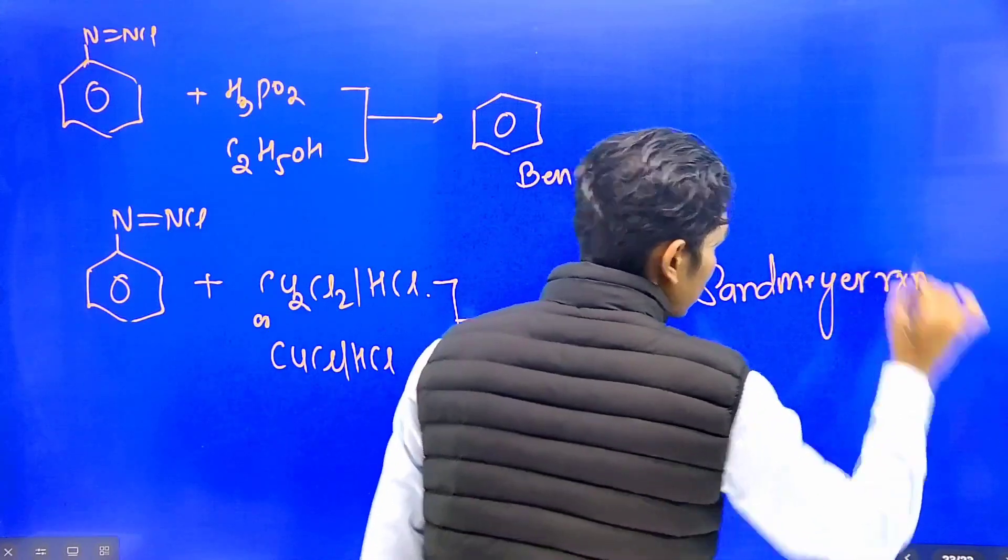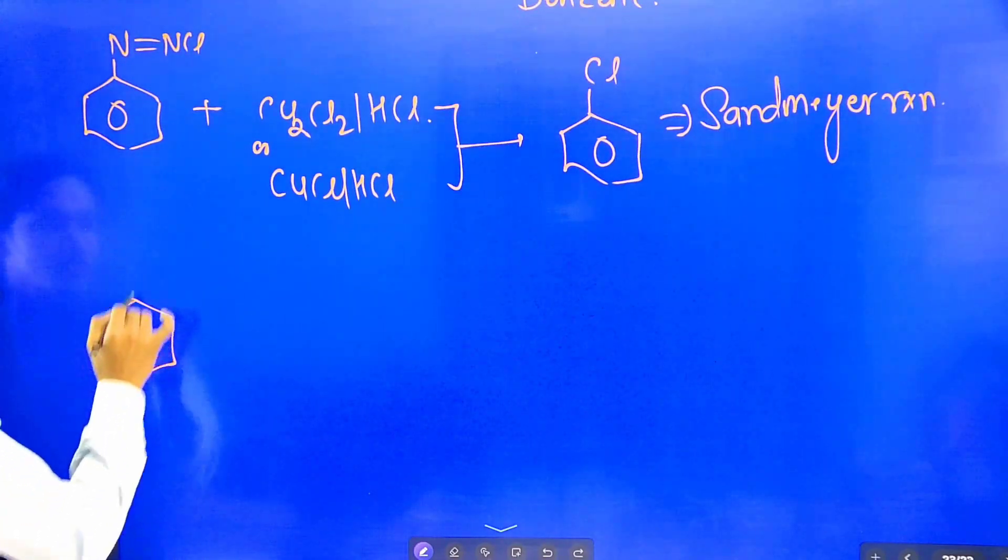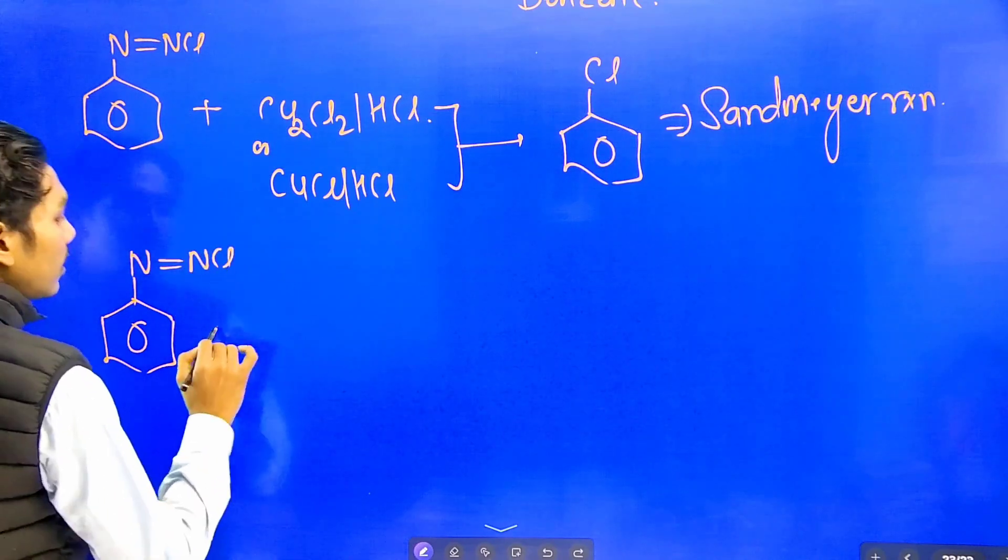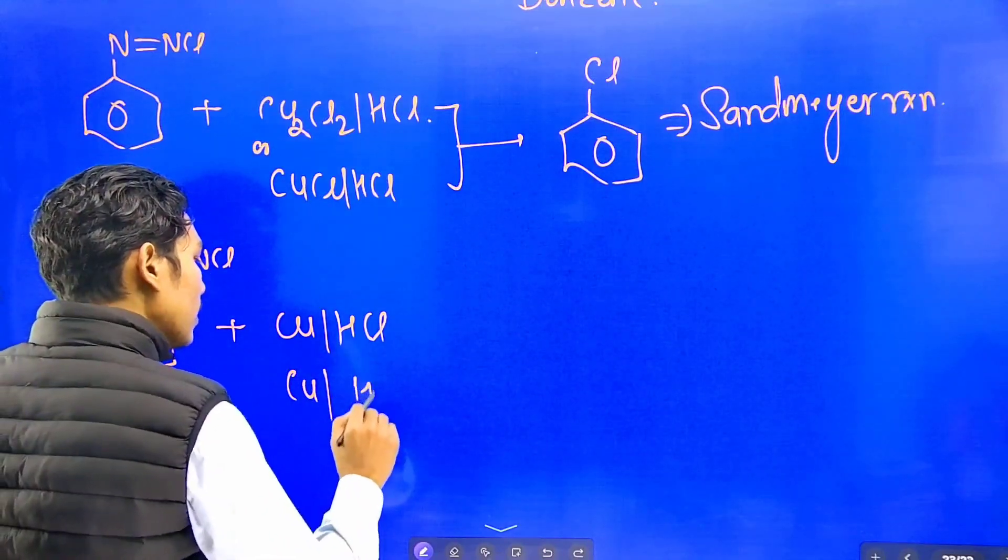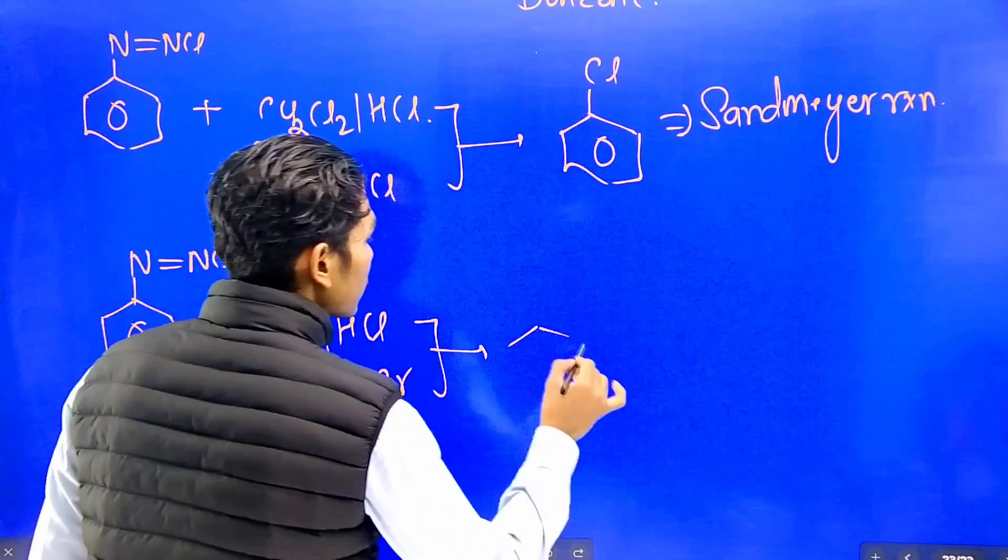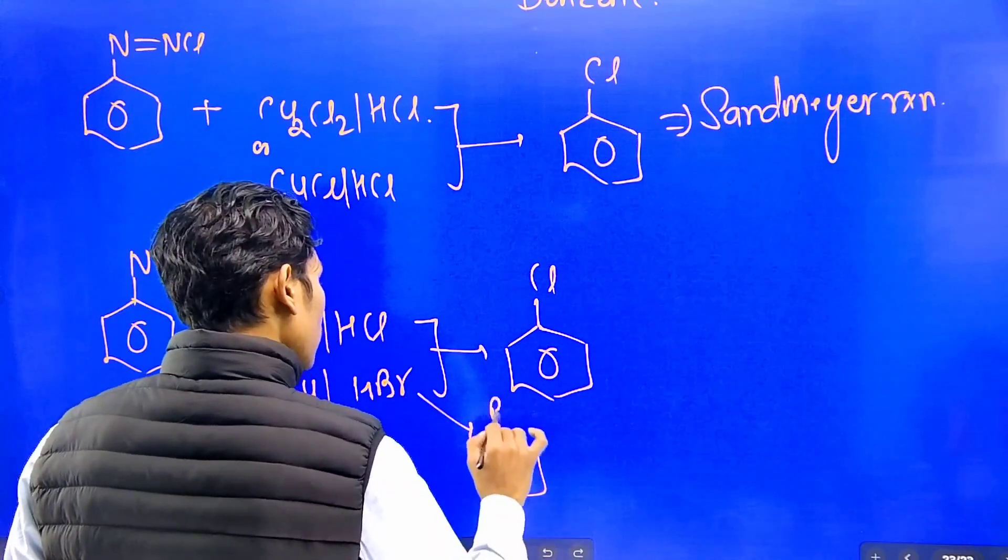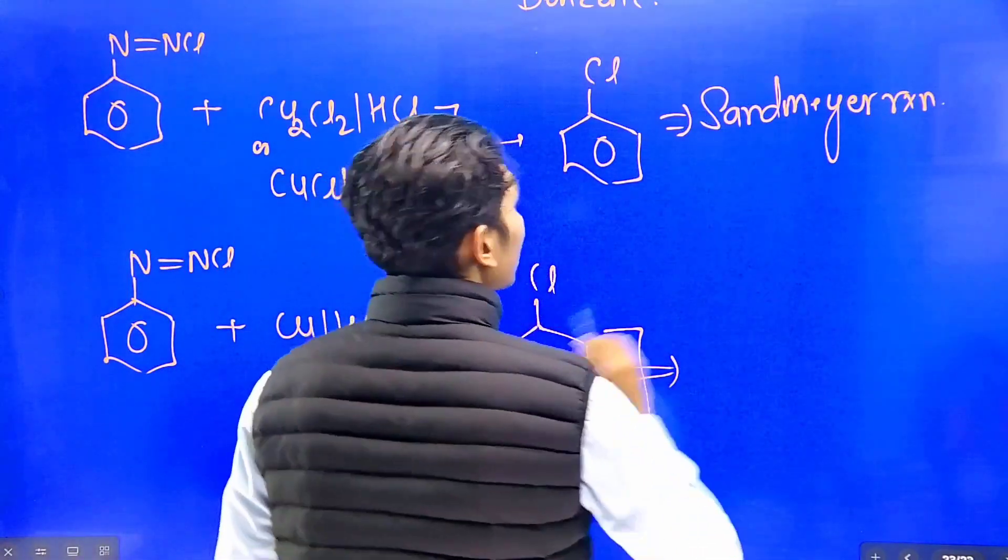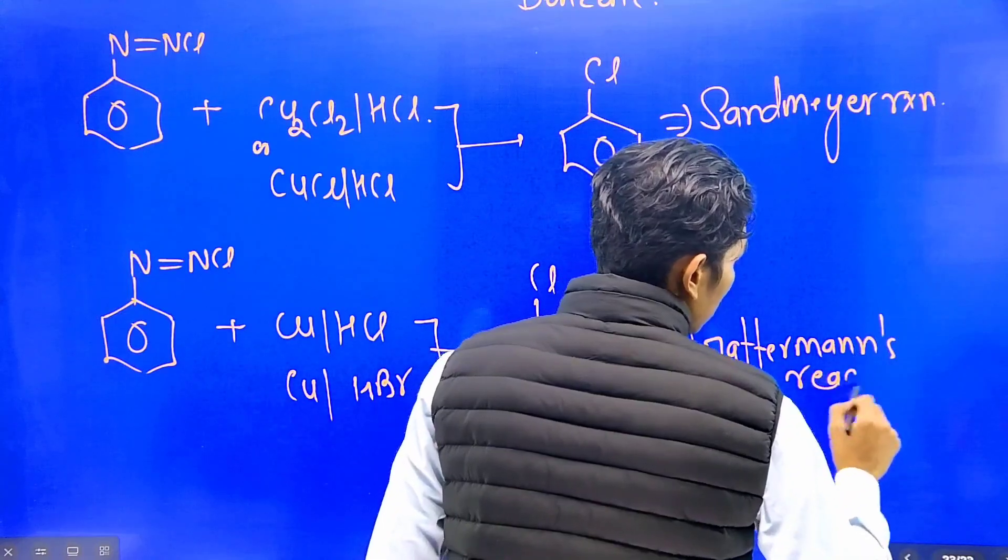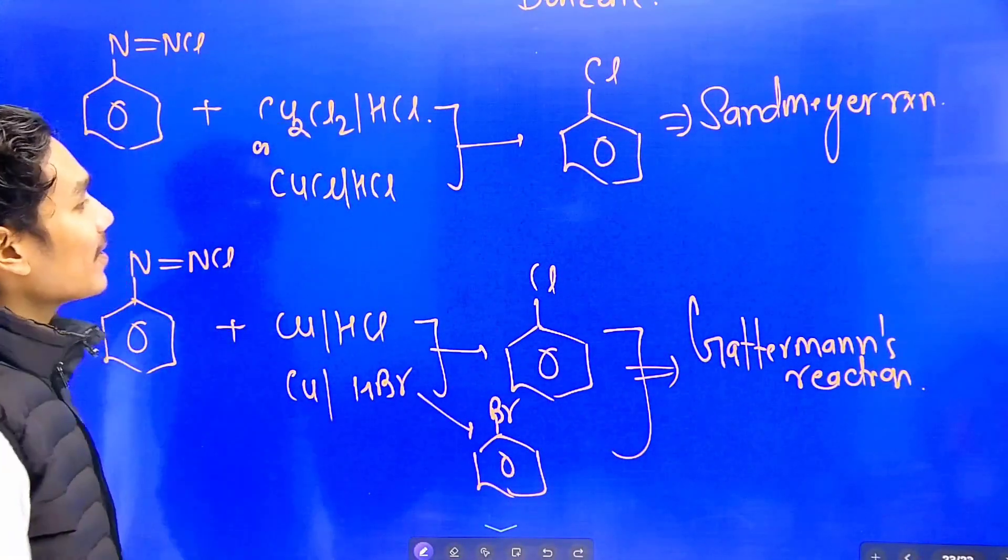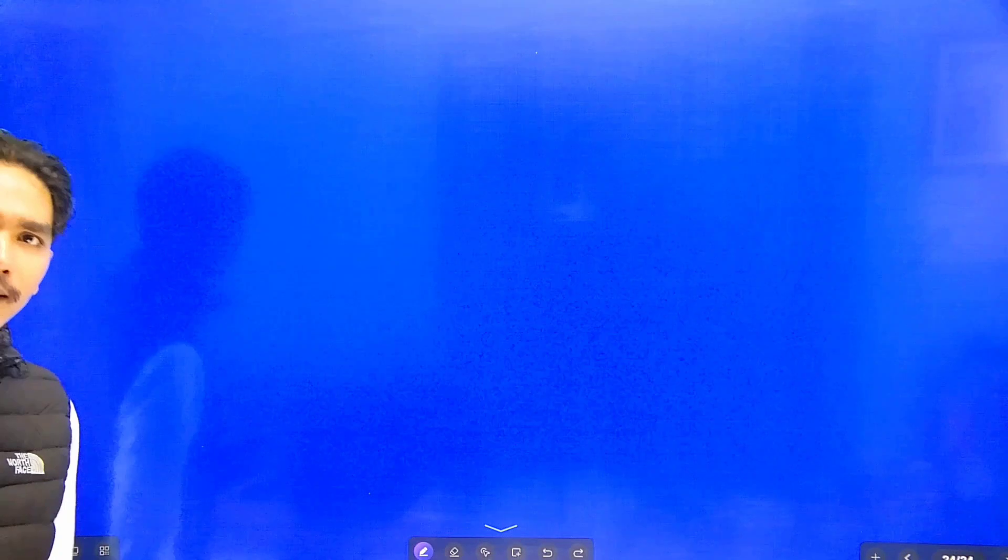Similarly, if we take diazonium salt N double bond NCl and react it with copper and HCl, or if we use HBr instead, what will be formed? Instead of chlorobenzene, bromobenzene will be formed. This reaction is known as Gattermann's reaction.